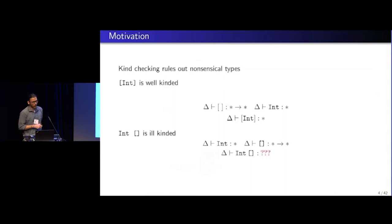And int applied to list is ill-kinded because we cannot compute the kind of this so-called type. But the type checker can flag it out as an error and the user would be notified.